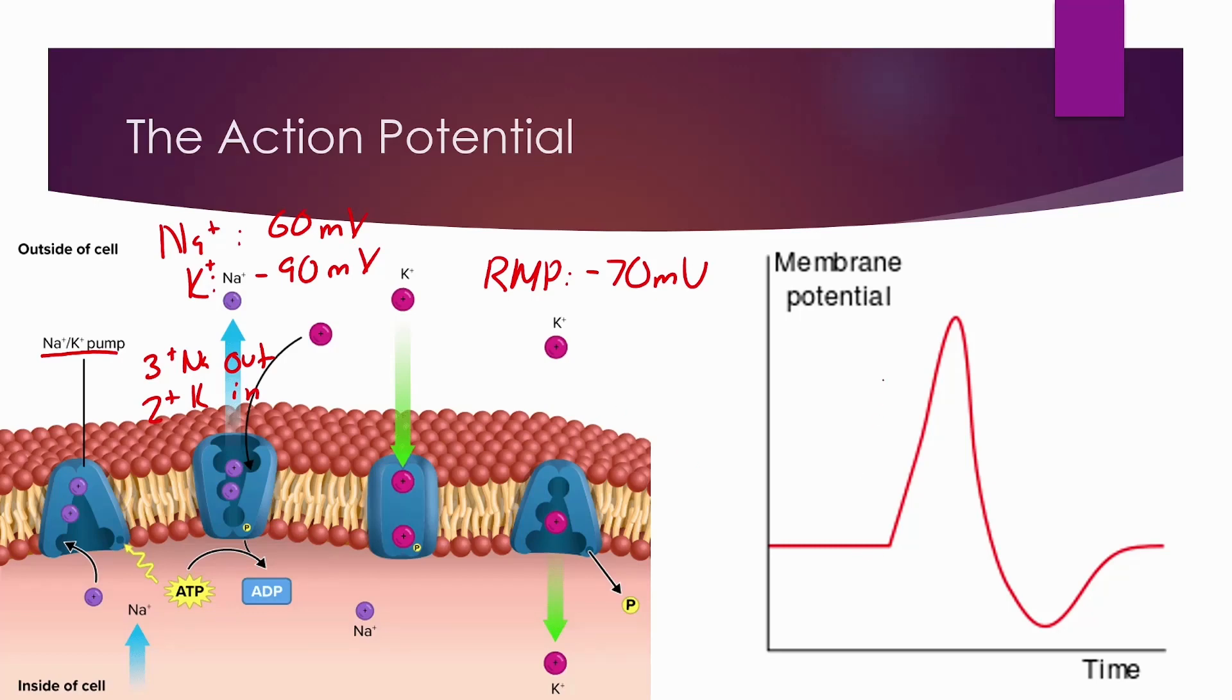That being said, let's move on to how it all changes. When the axon hillock sends the action potential, or when it's receiving signals, eventually it will reach a threshold where it'll be able to send the action potential. Right here, that's where it's going to be sending the signal. Once that happens, sodium channels will start to open.